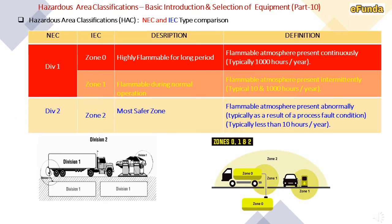NEC and IEC type comparison is covered in a table: NEC Division 1 is equivalent to IEC Zone 0 and Zone 1; NEC Division 2 is equivalent to IEC Zone 2. The descriptions and definitions remain the same. Figures are shown clearly indicating how the divisions and zones 0, 1 and 2 are classified.